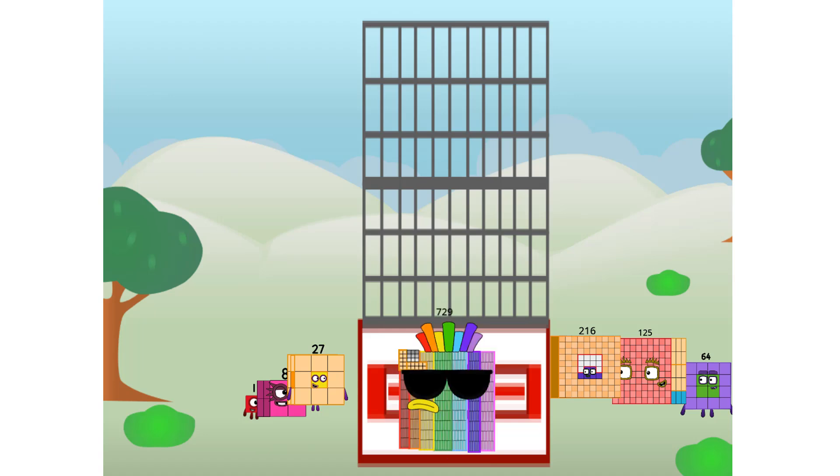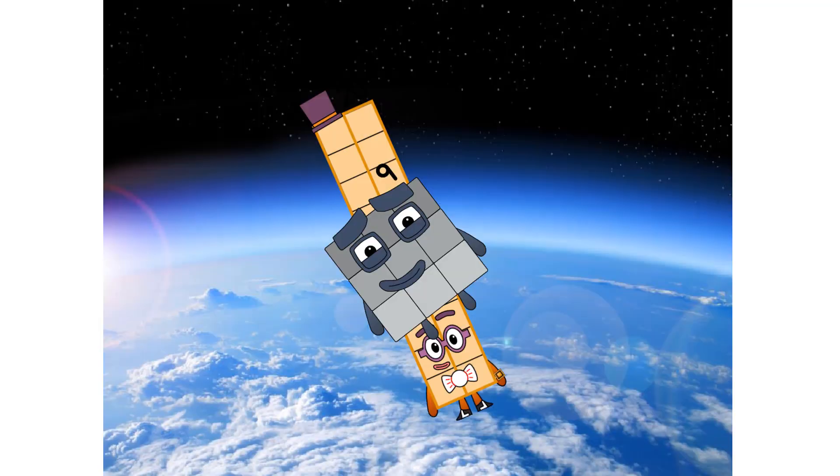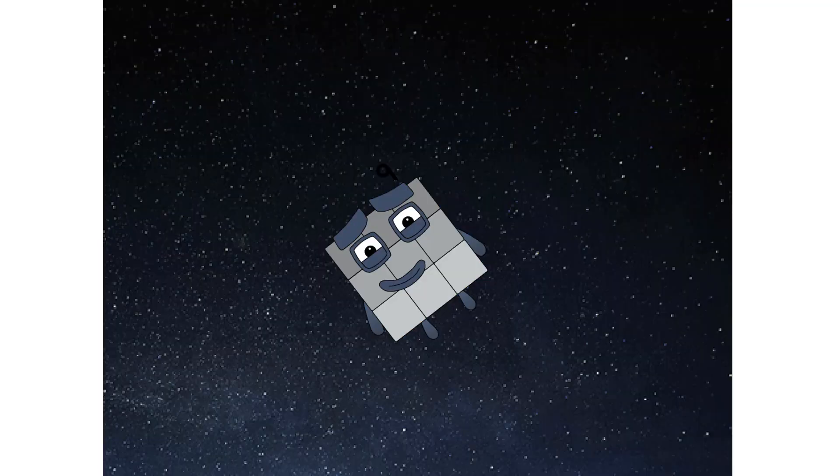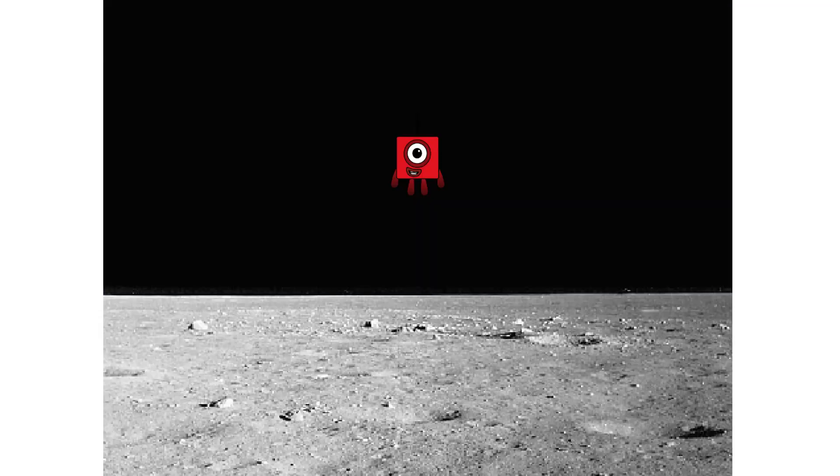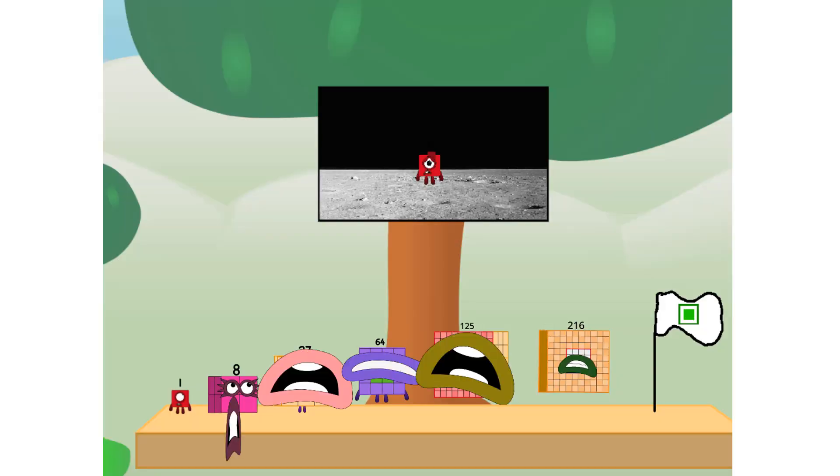Prepare for launch. We have liftoff. Primary launch stage completed. Engaging secondary stage. We've reached space. Second stage complete. Entering lunar orbit. Launching lunar lander. The square has landed. We did it. The only thing left now is to plant the square club flag. Number land, we have a problem. I forgot the flag.